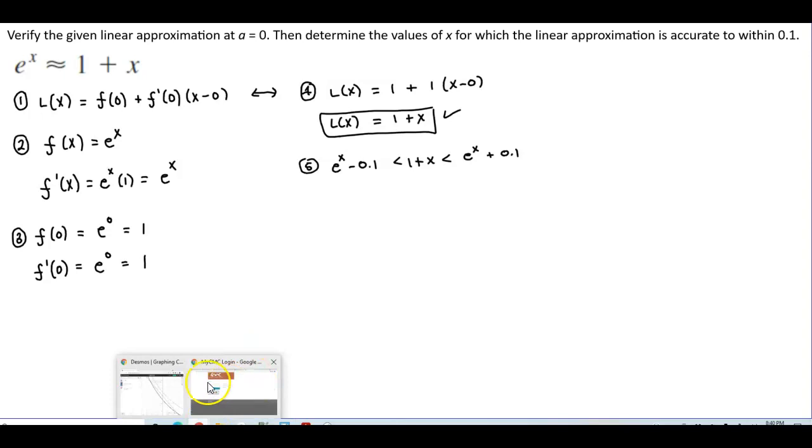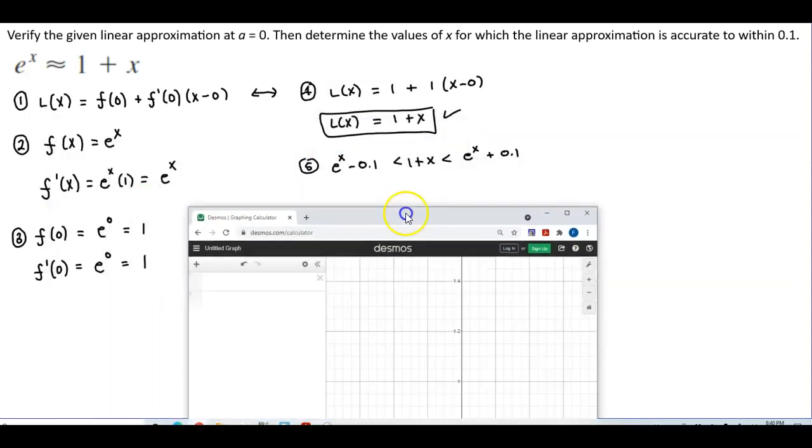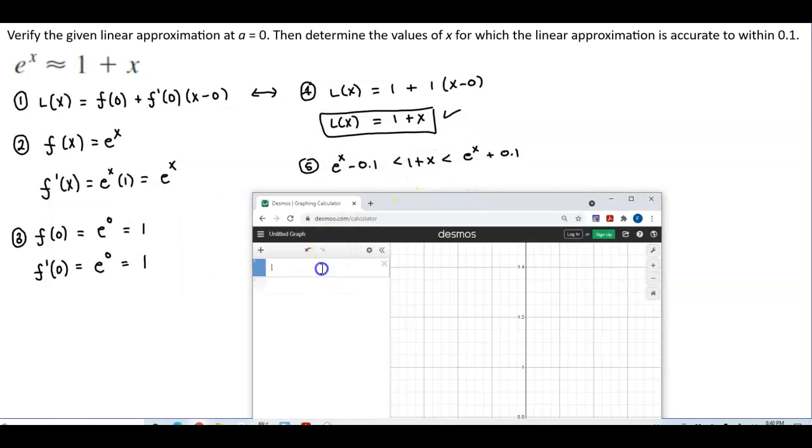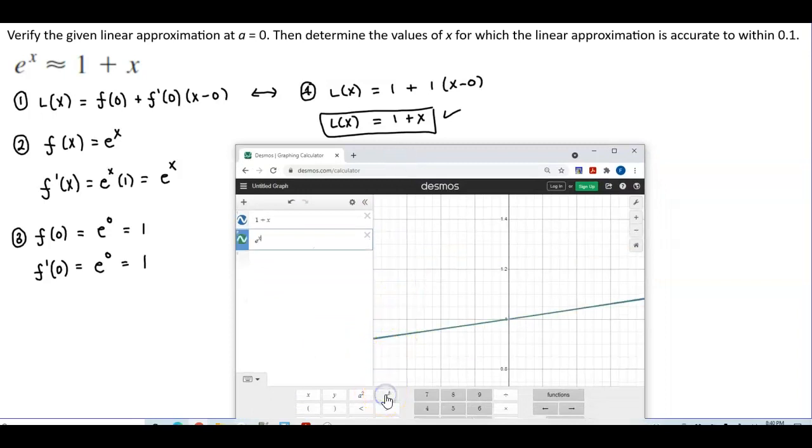So let's go ahead and graph this. We're first going to graph our line, which is 1 plus x, and then we're going to graph e to the x minus 0.1, and do the same thing, only it's going to be e to the x plus 0.1.